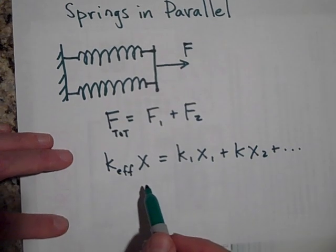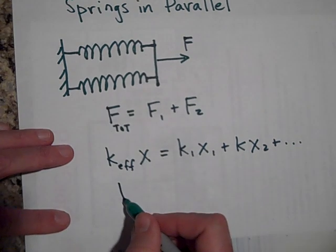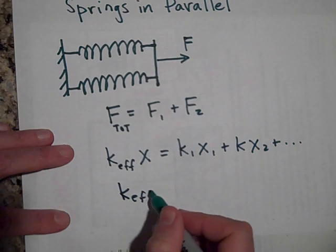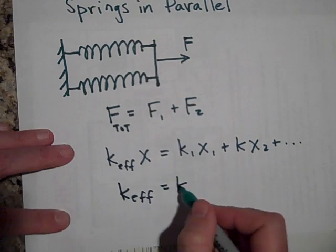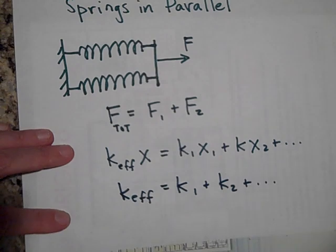And so when you do that, the X's are all the same, so they can cancel out. So K effective is equal to K1 plus K2 plus, and so on.